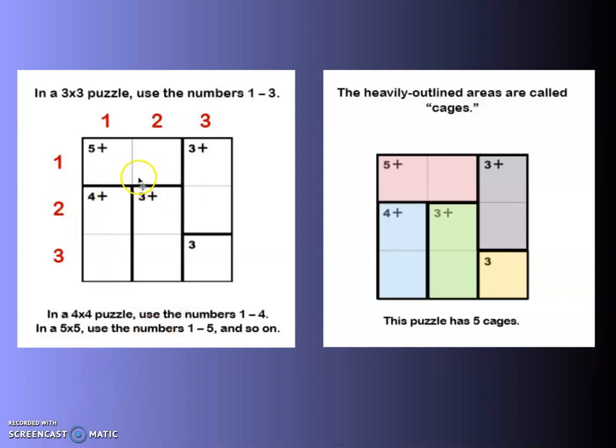So these rectangles within our 3x3, here you can actually see they're colored to make it a bit more clear, these are called cages. This puzzle has got 5 cages: 1, 2, 3, 4, 5.